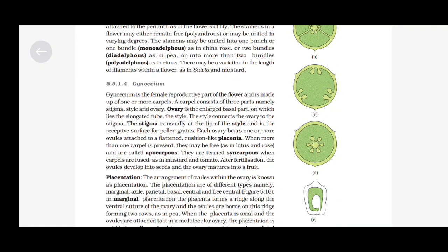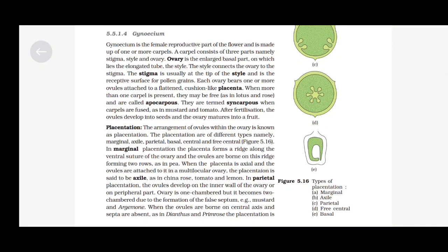Gynoecium: Gynoecium is the female reproductive part of the flower and is made up of one or more carpels. A carpel consists of three parts: stigma, style and ovary. The ovary is the enlarged basal part on which lies the elongated style. The style connects the ovary to the stigma. The stigma is usually at the tip of the style and is a receptive surface for pollen grains. Each ovary bears one or more ovules attached to a flattened cushion-like placenta. When more than one carpel is present, they may be free, as in lotus and rose, and are called apocarpous. They are termed syncarpous when carpels are fused, as in mustard and tomato. After fertilization, the ovules develop into seeds and the ovary matures into a fruit.